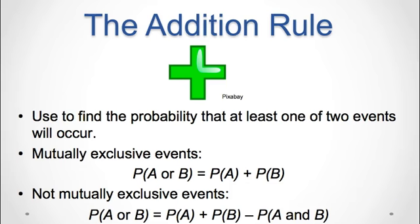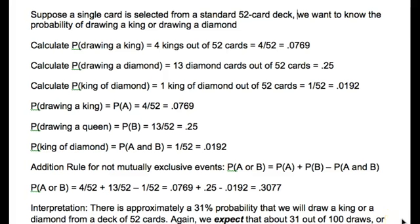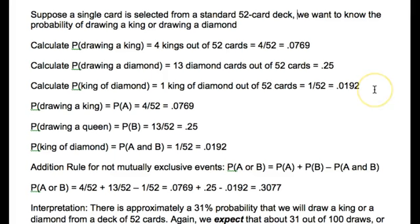Let's look at an example. Suppose a single card is selected from a standard 52-card deck. We want to know the probability of drawing a king or drawing a diamond. These events are not mutually exclusive because the king of diamonds is in both events, so we use the addition rule. P(king) = 4/52 = 0.0769. P(diamond) = 13/52 = 0.25. P(king of diamonds) = 1/52 = 0.0192.